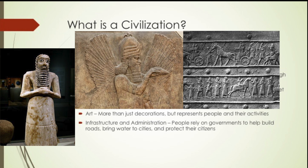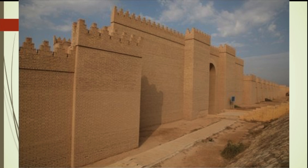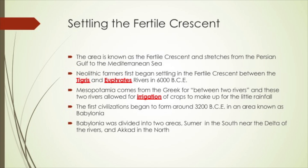The fourth aspect is art, and this is more than just decorations — there needs to be art that can represent people and their activities. Finally, civilizations need infrastructure and administration. People rely on governments to help them build roads, bring water to cities, and protect their citizens. Government and infrastructure is a key aspect of what makes a civilization.